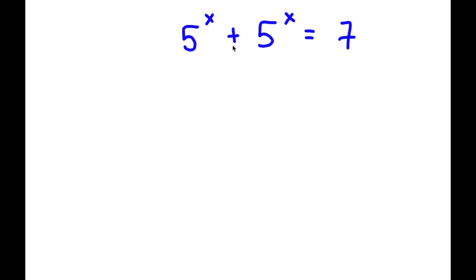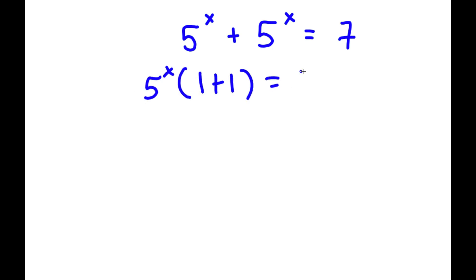In this problem, I have phi to the power of x plus phi to the power of x is equal to 7. The first thing I'm going to do is factor out phi to the power of x from my left hand side. So now I have phi to the power of x times 1 plus 1 is equal to 7. But 1 plus 1 is 2, so I have phi to the power of x times 2 is equal to 7.